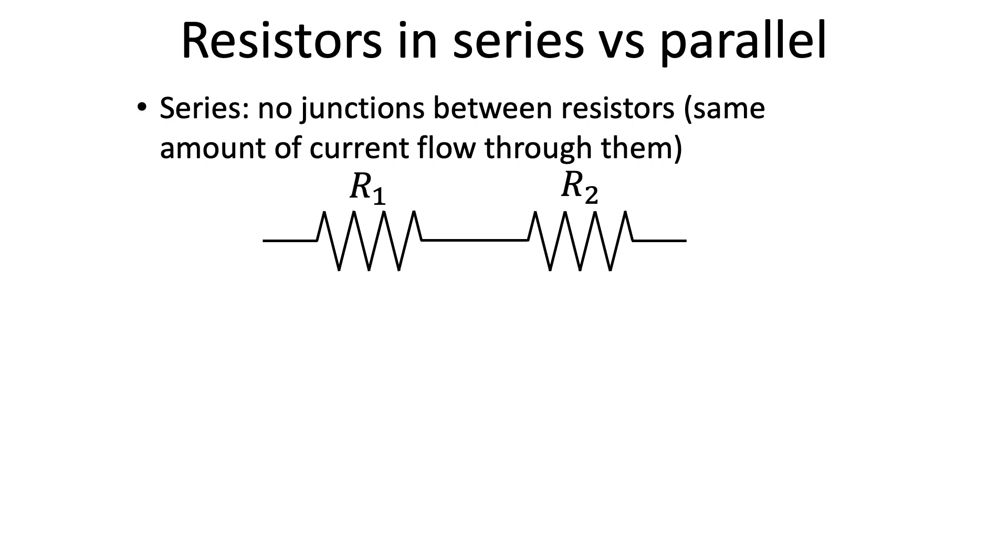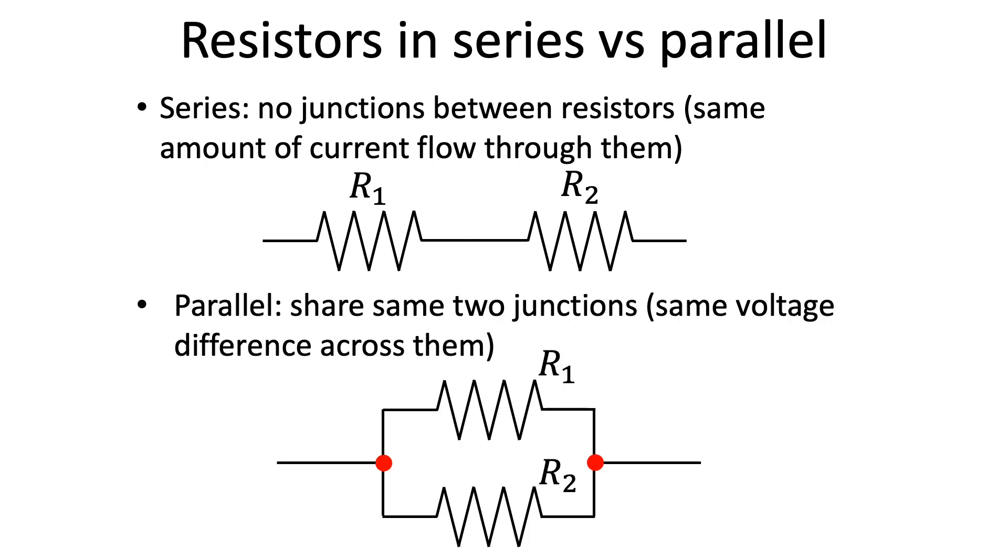Two resistors are in parallel if they share two common junctions. In the second diagram, the two junctions are highlighted by red circles.